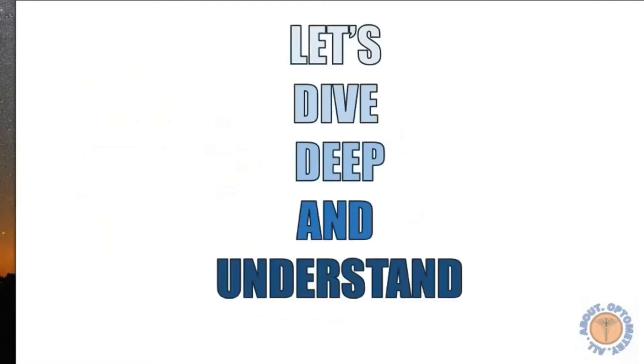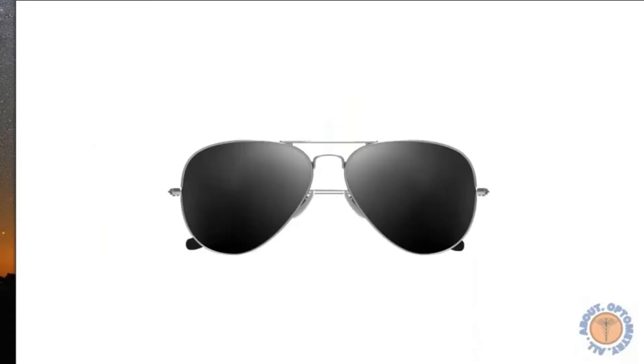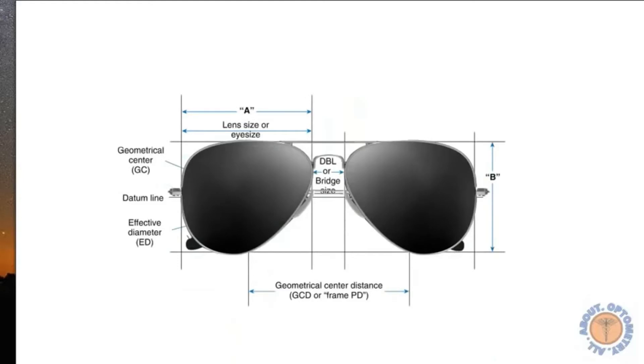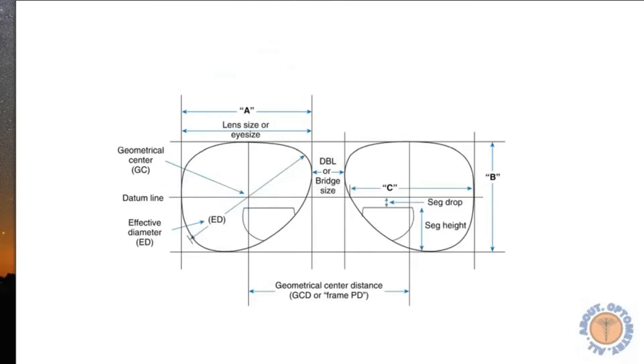Now here we have a spectacle frame right here. The boxing system draws two horizontal lines on the top of the frame and two vertical lines on the sides, that is on the left and right edges of the lens. All four lines form a box around the lenses. The lines that you see in the middle is called the datum line. It's also called the midline or the 180 degree line.